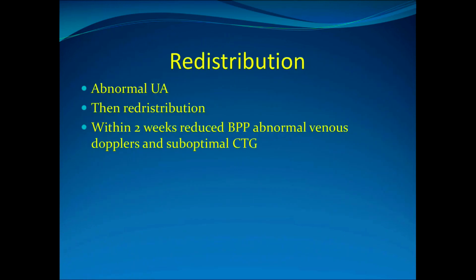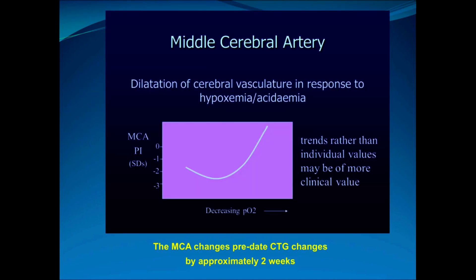When we have redistribution in the middle cerebral artery, we start with an abnormal umbilical artery. Redistribution then occurs, and within approximately two weeks you have a reduced biophysical profile, abnormal venous Dopplers, and a suboptimal CTG. The middle cerebral artery shows dilation of the cerebral vasculature in response to hypoxia or acidaemia. This is the fetus opening up its cerebral vessels to take as much blood as possible into the brain in response to placental resistance.